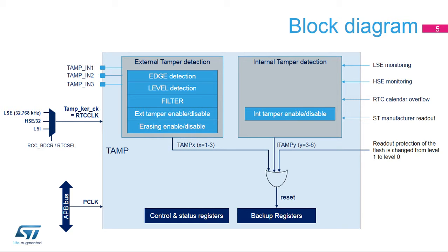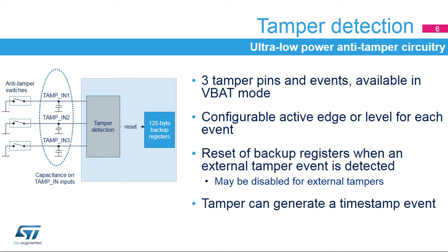Note that the backup registers are not reset by system reset or when the device wakes up from standby mode. Backup registers can be reset when a tamper detection event occurs or when the readout protection of the flash is changed from level 1 to level 0. The TAMP embeds ultra-low power tamper detection circuitry to detect physical tampering in a secure application and to automatically erase sensitive data in case of intrusion. Three tamper pins and events are supported and are functional in all low power modes and in VBAT mode. The detection can be edge or level triggered, and a pre-charge time is determined by the TAMP PRETCH bits to support large capacitances on the TAMP IN X inputs.